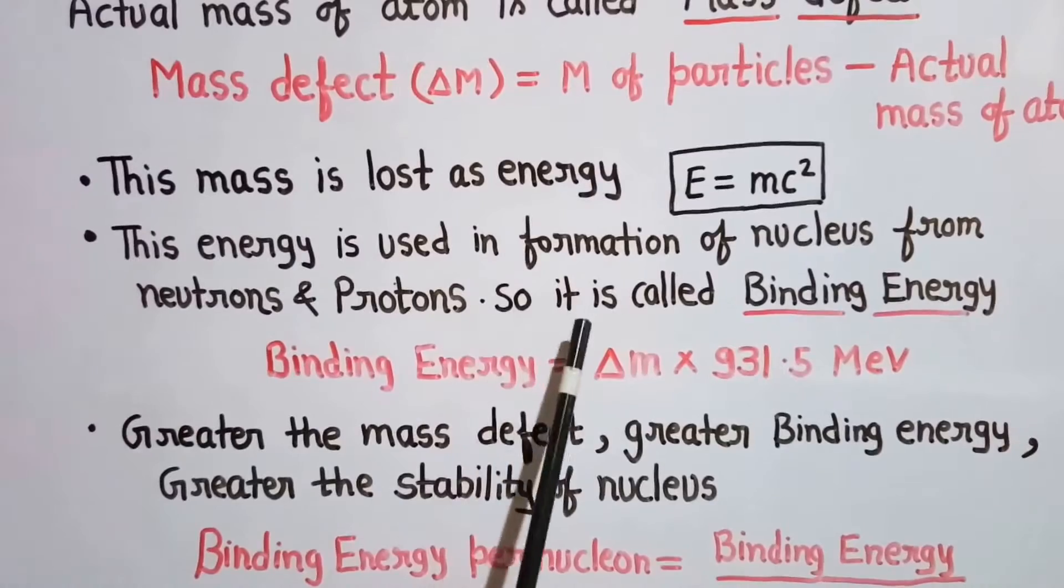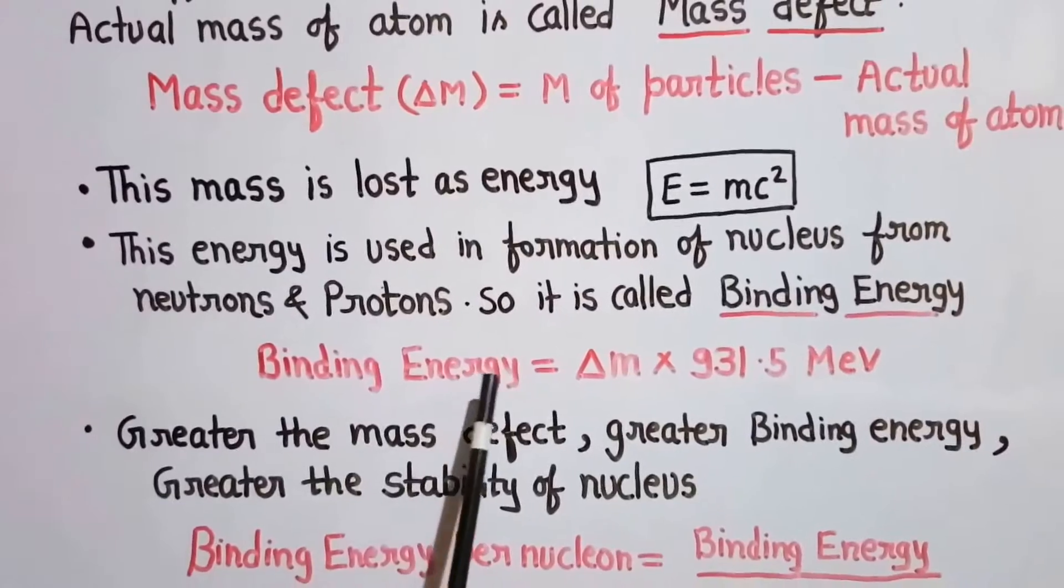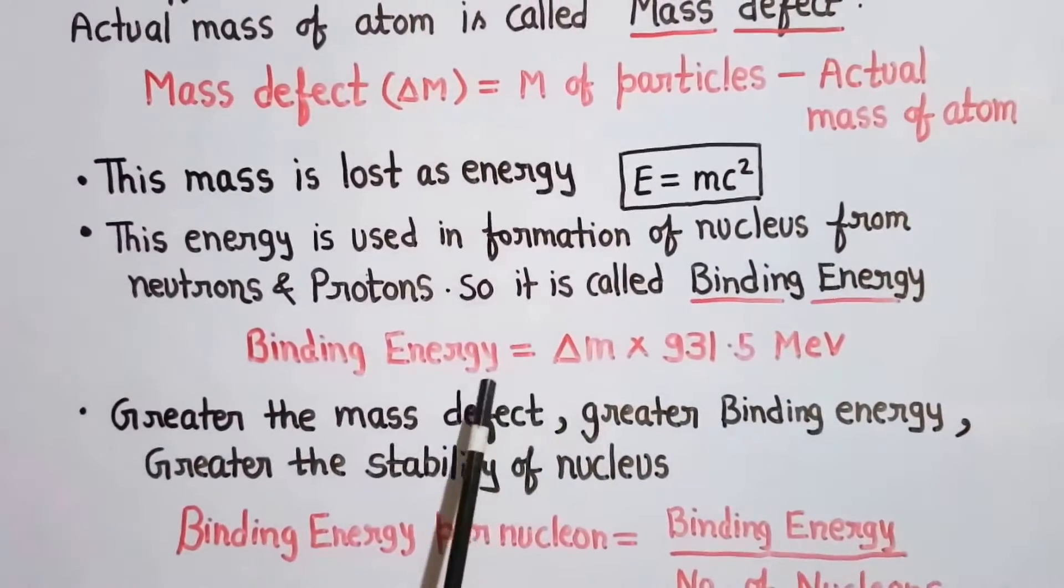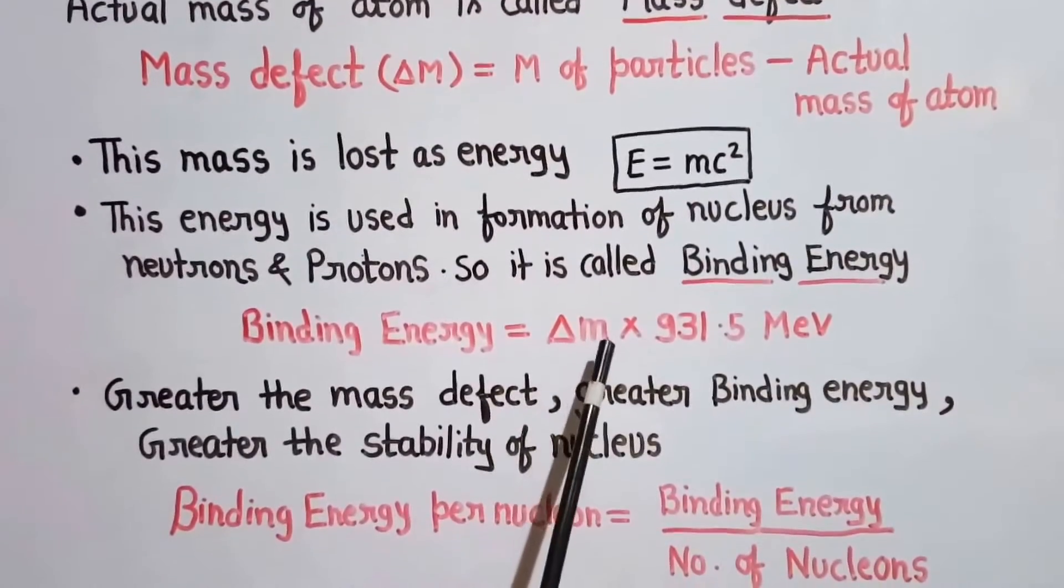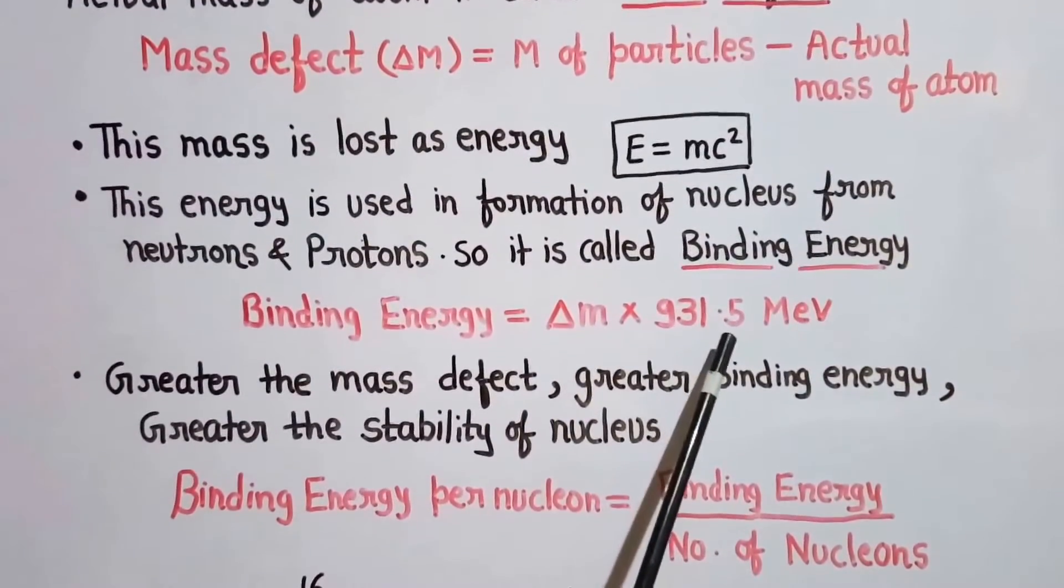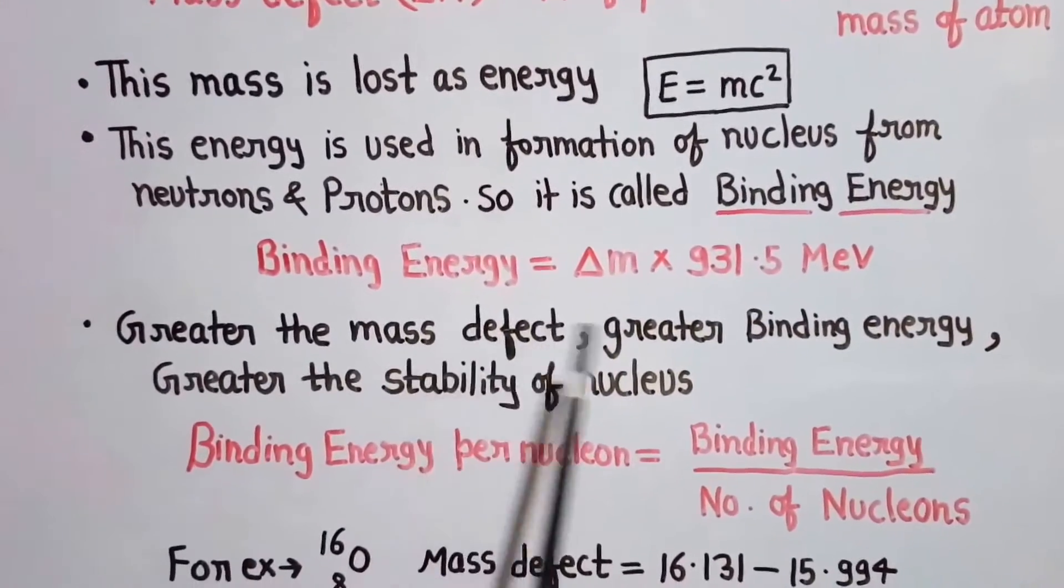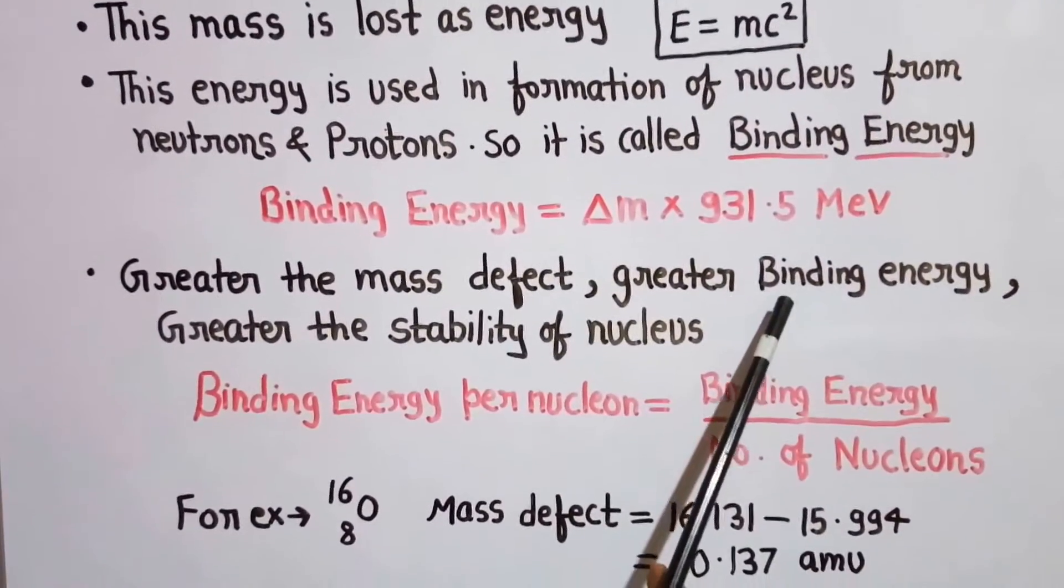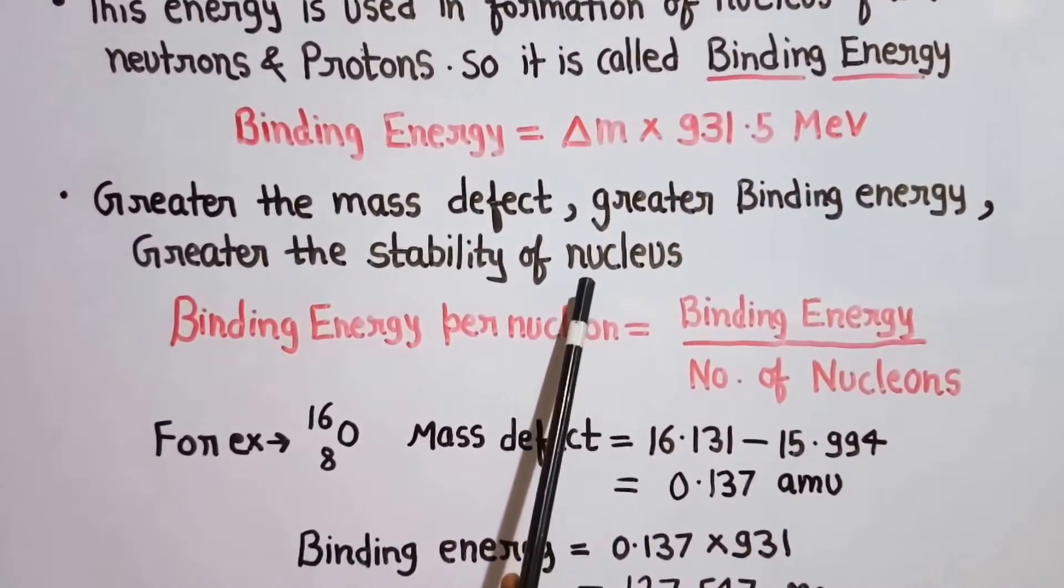So this energy binds the neutrons and protons together in the nucleus, and hence it is known as binding energy. This binding energy is related to mass defect by this formula: binding energy is equal to Δm into 931.5 MeV. So greater the mass defect, greater will be the binding energy, and hence greater will be the stability of nucleus.